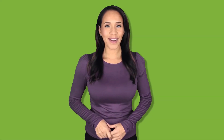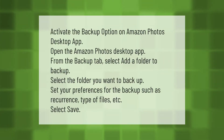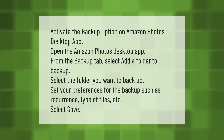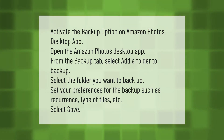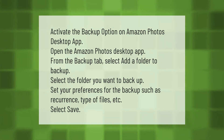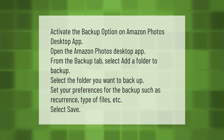To activate the backup option on the Amazon Photos desktop app: open the Amazon Photos desktop app. From the Backup tab, select 'Add a folder to backup,' select the folder you want to back up, set your preferences for the backup such as recurrence and type of files, then select 'Save'.